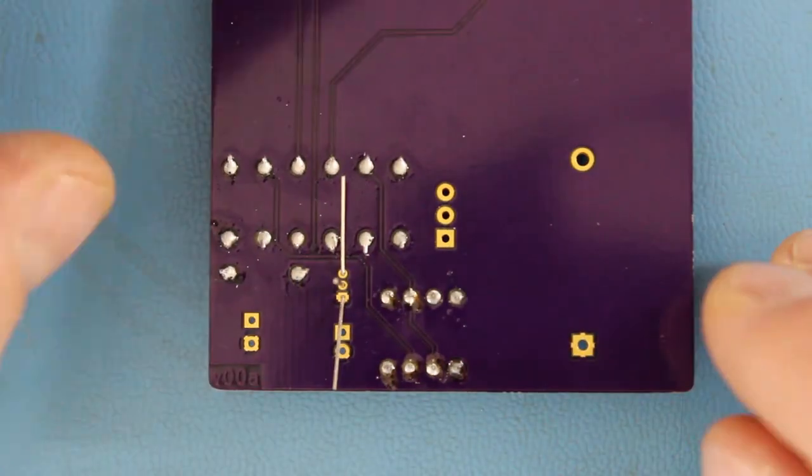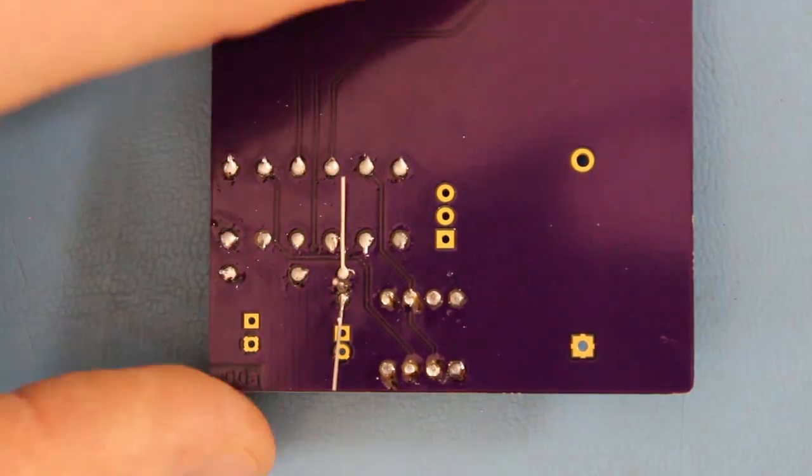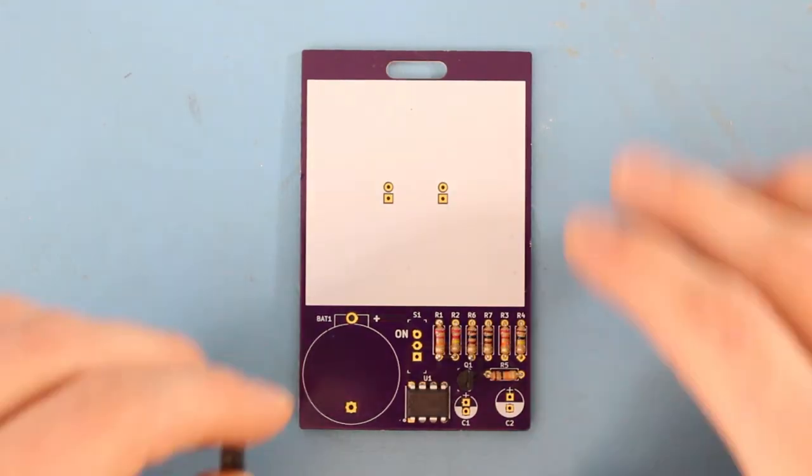Flip the board over, bend the leads out to have the transistor stay in place, solder the joints, and then clip off the excess.